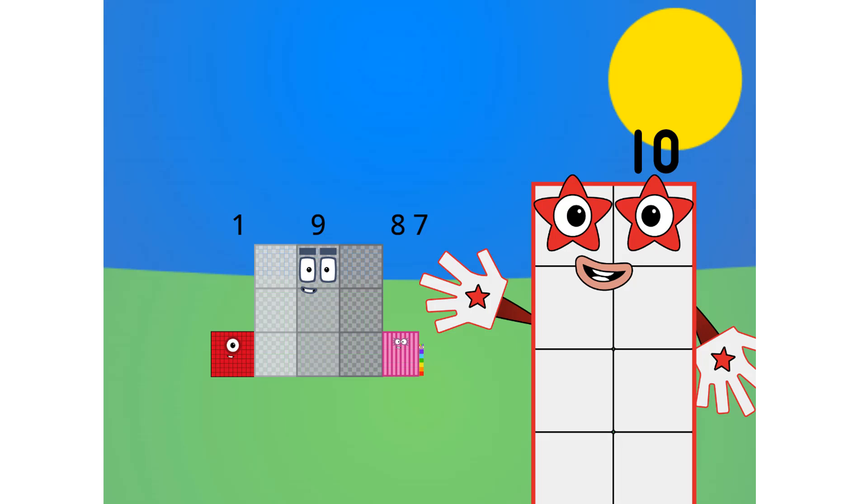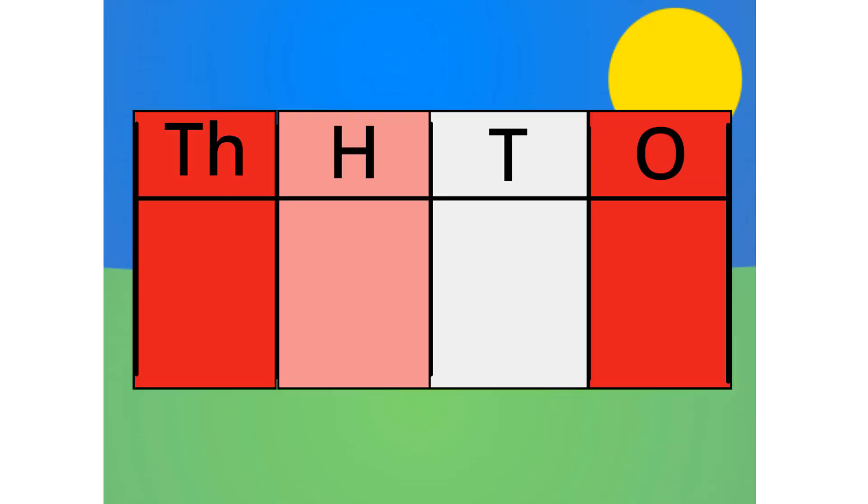As you can see, this number is 1, 9 hundreds, 8 tens, and 7 ones. Let me carry on with the first method. Do you notice anything with this table? Correct. The number multiplies by 10 each time it goes left one column. Because it multiplies by 10 each time, we call the system base 10.